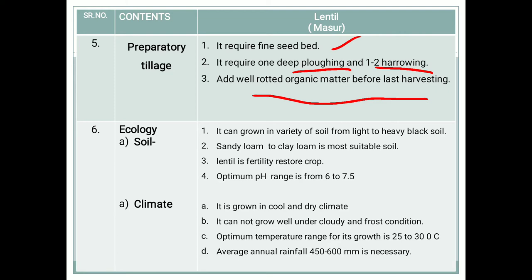Regarding ecology — that means soil and climate — it is nearly the same as the gram crop. Regarding soil, lentil can grow in a variety of soils, from light to heavy black soil. Sandy loam to clay loam soil is most suitable for this crop. Lentil is a fertility-restoring crop because, being a pulse crop, it fixes atmospheric nitrogen into the soil. The optimum pH range should be between 6 to 7.5.